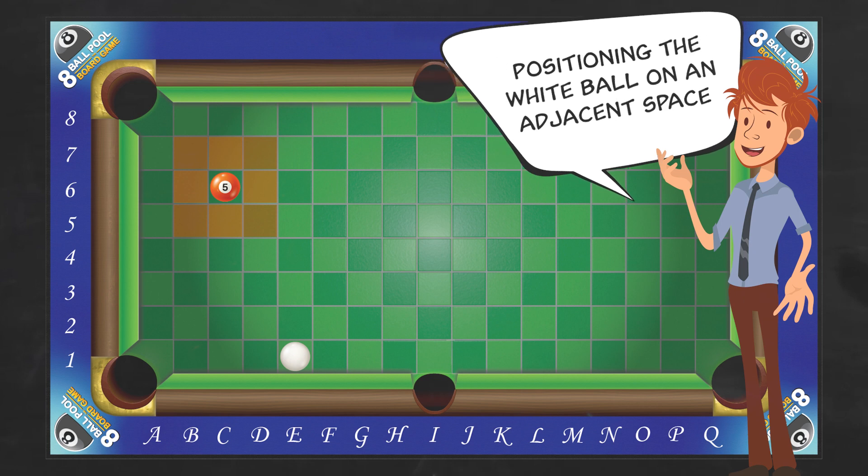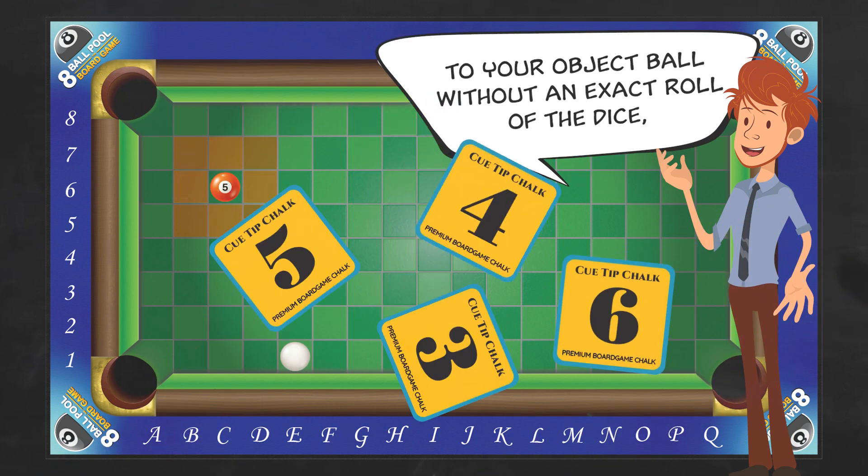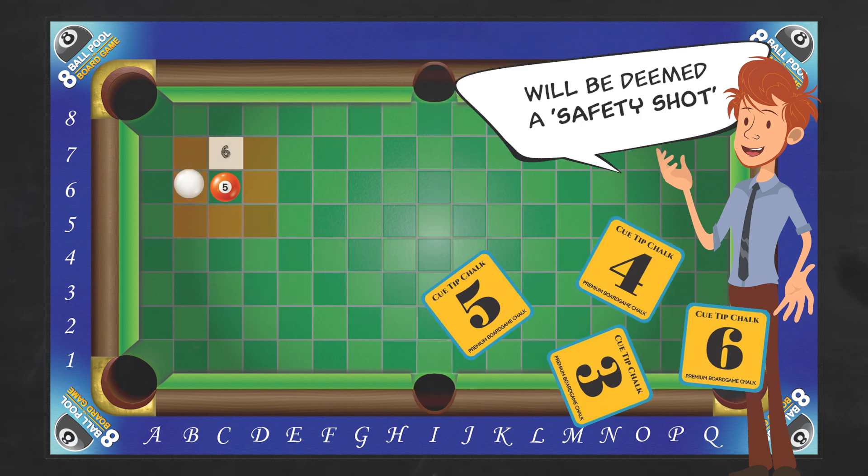Positioning the white ball on an adjacent space to your object ball without an exact roll of the dice will be deemed a safety shot.